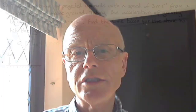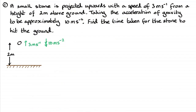Thanks for watching and we'll get started with the questions. For question number one, we've got a small stone projected upwards with a speed of three metres per second from a height of two metres above the ground. Taking the acceleration of gravity to be approximately 10 metres per second squared. There's our stone projected upwards three metres per second from a height of two metres above the ground, with acceleration due to gravity approximately 10 metres per second acting downwards.